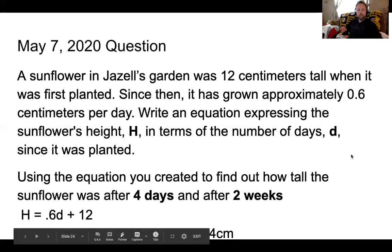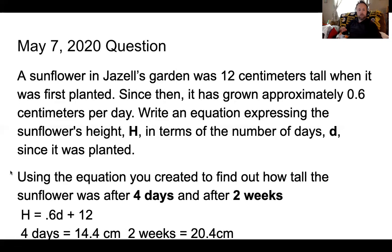So using the equation, what we were given is H equals 0.6d plus 12. So four days, four times 0.6 plus 12, gives me 14.4 centimeters. And remember two weeks is 14 days, so 14 times 0.6 plus 12 gives me 20.4 centimeters.